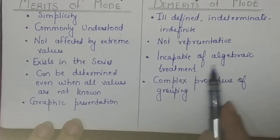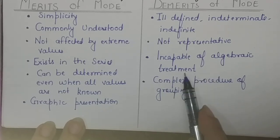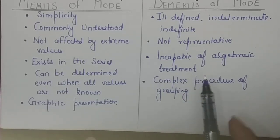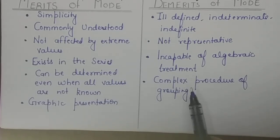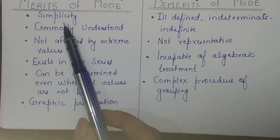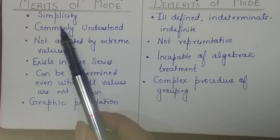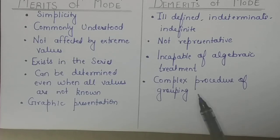Another demerit is that there is no further algebraic treatment possible with mode, so it is not used in advanced statistical or research tools. Also, mode can be a complex procedure to calculate. While it seems simple for a discrete series where you identify it by inspection, for a complicated discrete series you need to use grouping methods, which makes the procedure quite complicated.